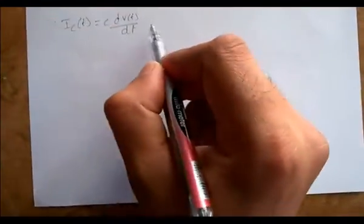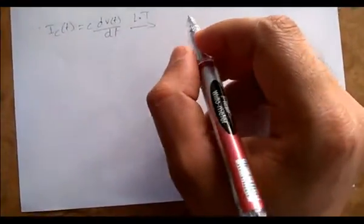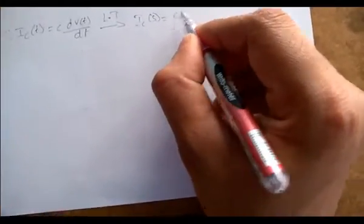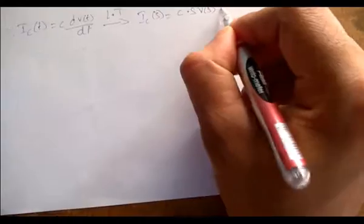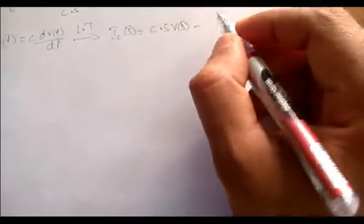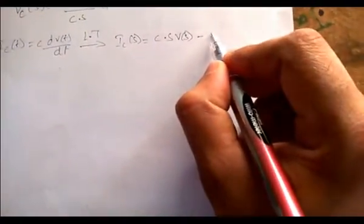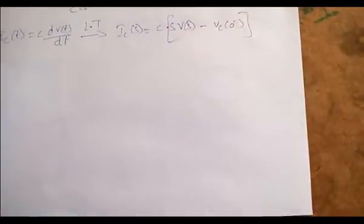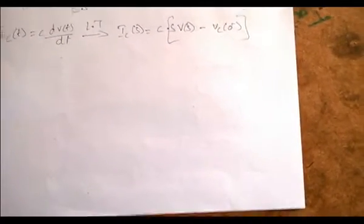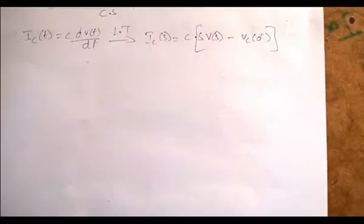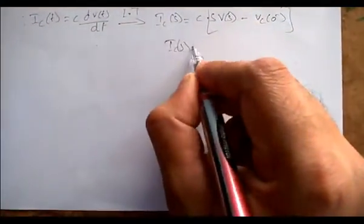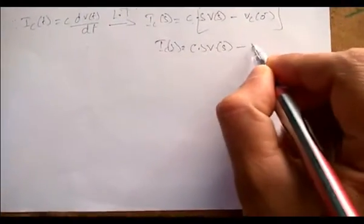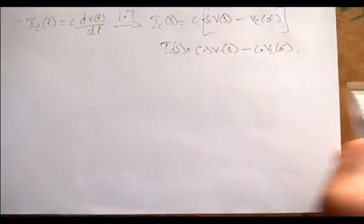Applying the Laplace transform to the current equation ic(t) = C·dV(t)/dt, we get IC(s) = C·[s·V(s) − Vc(0⁻)], which expands to IC(s) = C·s·V(s) − C·Vc(0⁻). Consider this the fifth equation.